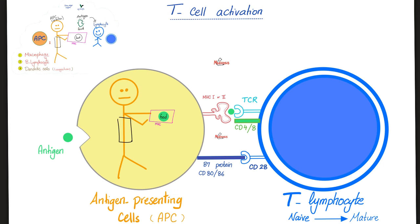Let's activate the T-cell. The antigen-presenting cell presents the antigen — like food — to the T-lymphocyte. The tray on which you put the food is the MHC. If we are activating CD8, we use MHC class 1. If we are activating CD4 T-lymphocytes, we use MHC class 2. So the product is always 8: MHC class 1 activates CD8, and MHC class 2 activates CD4.